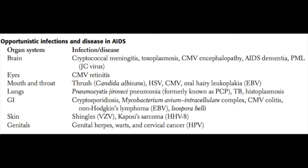In the eyes, we can see CMV retinitis. In the mouth, we see thrush caused by Candida albicans, herpes, CMV, and oral hairy leukoplakia caused by Epstein-Barr virus. In the lungs, we see pneumocystis pneumonia — formerly called PCP or Pneumocystis carinii pneumonia, now called Pneumocystis jirovecii pneumonia — as well as TB and histoplasmosis.